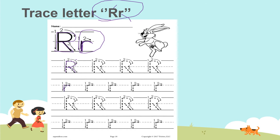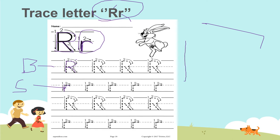This is your big letter R, and then we have your small letter R. Now let's try to write big letter R and small letter R without tracing. So here in this area, let's try to write. Kindly follow after me: one, two, go down, three. This is for your big letter R.